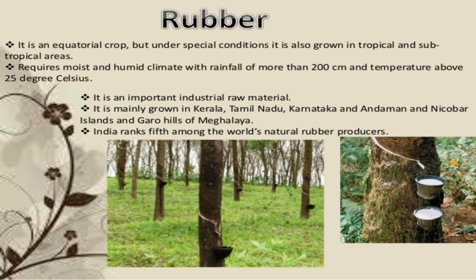Rubber is an equatorial crop, but under special conditions it is also grown in tropical and subtropical areas. It requires moist and humid climate with rainfall of more than 200 cm and temperature above 25 degrees Celsius. It is an important industrial raw material. It is mainly grown in Kerala, Tamil Nadu, Karnataka, Andaman and Nicobar Islands, and the Garo Hills of Meghalaya. India ranks fifth among the world's natural rubber producers.